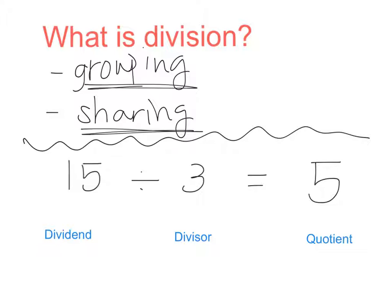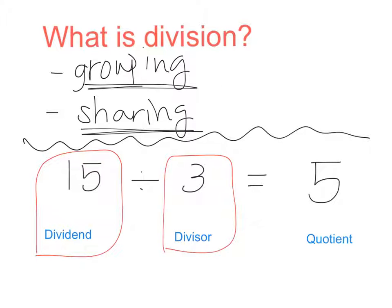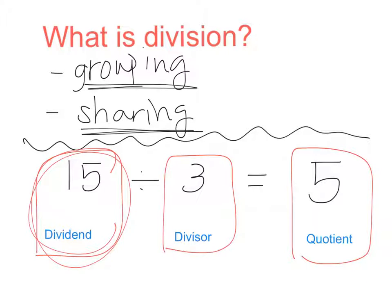When we do division, there are 3 different parts. The first number being divided is always called the dividend. In 15 divided by 3, 15 is the dividend. Write down this simple division problem with the label so you have an example. The second number, the number it's being divided by, is called the divisor — so 3 is the divisor. Finally, the answer — 5 in this case — is called the quotient. Today we're going to divide a decimal dividend by a whole number divisor, using what we know about place value.